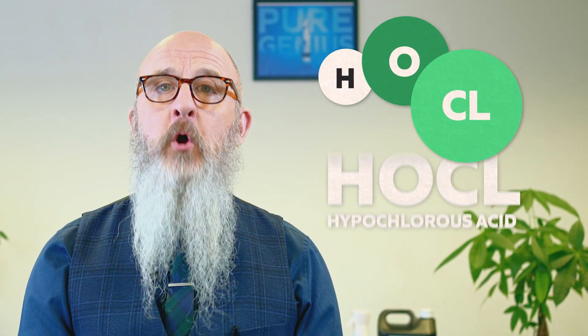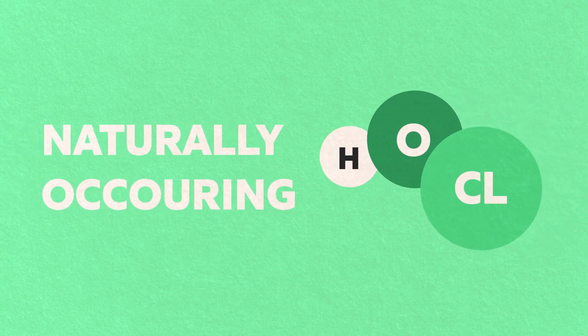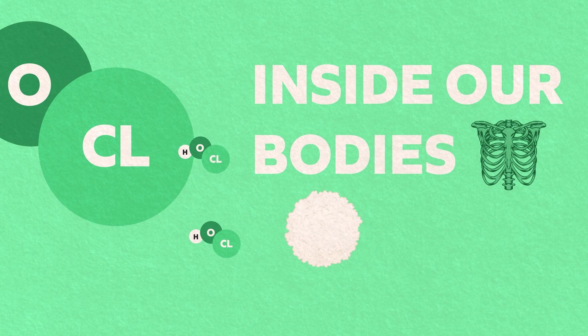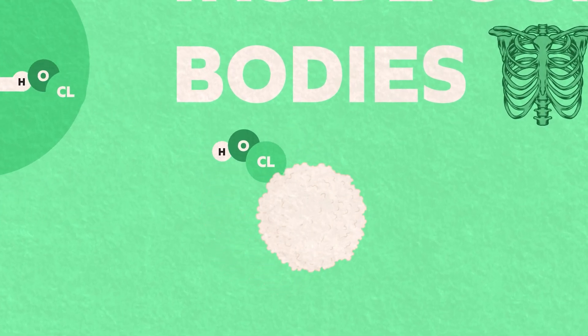The active ingredient is less than 0.02% of a chlorine compound called hypochlorous acid, or HOCl. Hypochlorous acid is a naturally occurring disinfectant that is produced in our bodies by our white blood cells to kill and break down pathogens. In this video we will cover how our HOCl solution is able to remain such an effective disinfectant at a safe concentration.